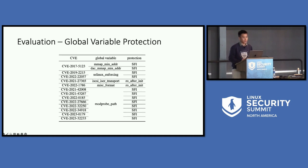We also apply UniS to protect global variables with two mechanisms: RO after init and general software fault isolation. To our best knowledge, in the recent six years there are about 13 out of 37 — one-third — of open exploits that leveraged global variables. As a result, UniS derived that all of those exploits are using illegal pointers. So if we apply the access control mechanism through the rules derived by UniS, we can prevent them all.